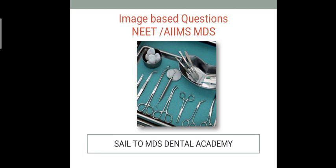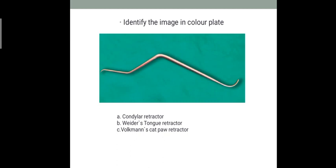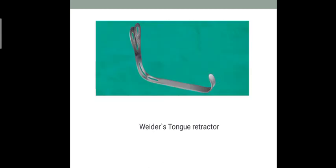What's the image given in the color plate? The options are condylar retractor, Weeder's tongue retractor, or Volkmann's cat paw retractor. The answer is condylar retractor. This condylar retractor is used during releasing of ankylosis to protect the medial soft tissues. When studying image-based questions, focus on two things: know what the option is and see images of the other options too.